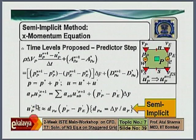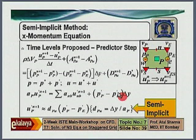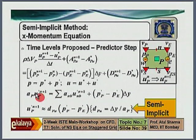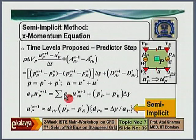The second question concerns the semi-implicit method. There is one step that makes the method semi-implicit; otherwise it would be fully implicit. The key equation is the velocity correction at node P as a function of velocity corrections of neighboring nodes. Before this step, everything was fully implicit.